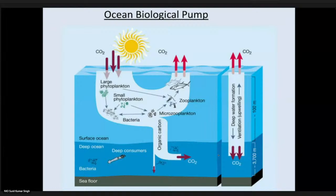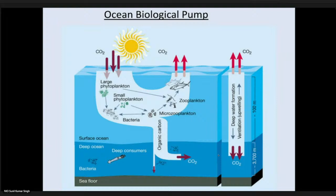This is a very important cartoon which everybody is aware of — the ocean biological pump — in which, in the presence of sunlight, carbon dioxide is converted to organic carbon through photosynthesis by large and small phytoplankton. It is then converted to zooplankton and fisheries. Part of this organic carbon goes to the deep ocean and part to the sediments, where it is permanently locked. This entire process of productivity controls atmospheric CO2 at a level comfortable for life to survive.